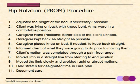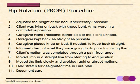Here is the hip rotation procedure. One: adjust the height of the bed if necessary. Two: client lying on their back with knees bent, arms in a comfortable position. Three: caregiver hand positions — on either side of the client's knees. Four: caregiver kept back as straight as possible. Five: caregiver placed knee on bed if needed. Six: inform the client prior to moving them. Seven: motion completed through a pain-free range. Eight: move the limb in a straight line. Nine: move slowly, avoid rapid motions. Ten: hold for the designated time. Eleven: document the care.